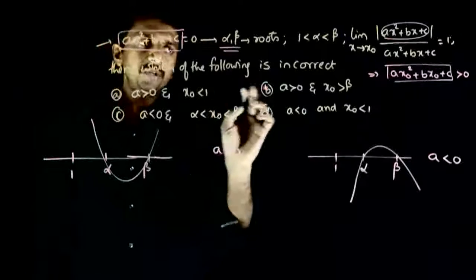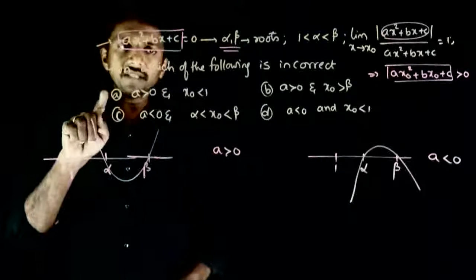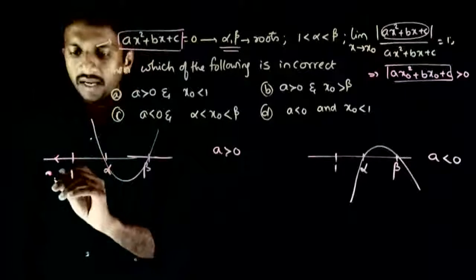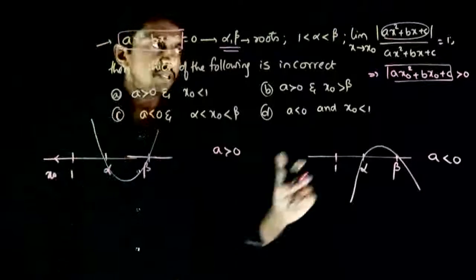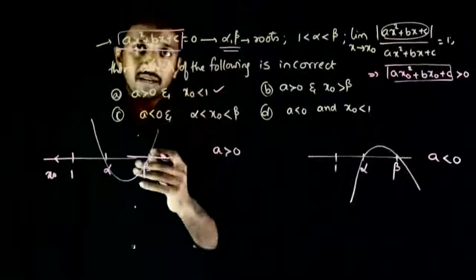So you can see, in two options a is greater than zero. If a is greater than zero and x0 less than one, the function value is positive. So this condition is satisfied. This is correct, not incorrect.